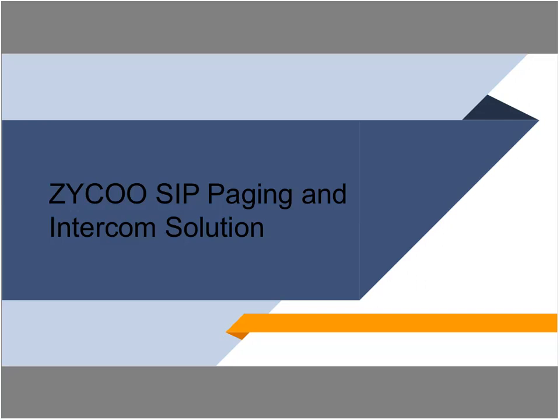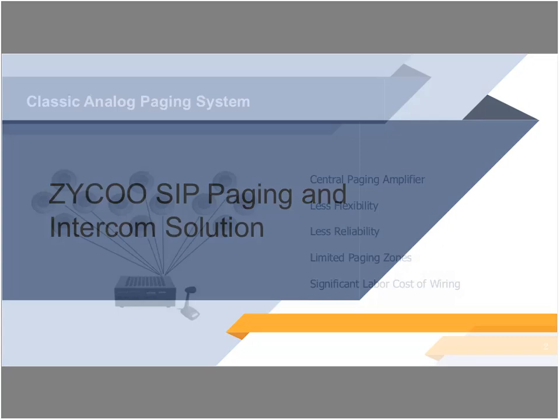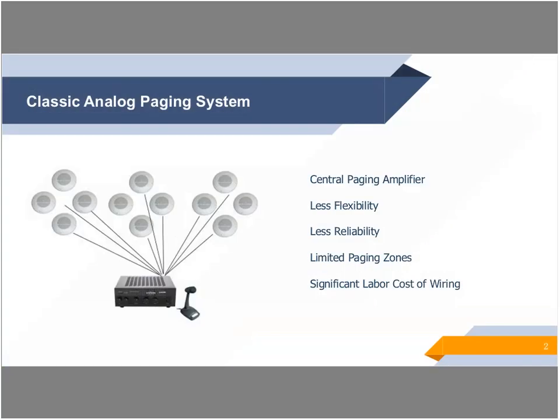First of all, we will take a look at the SIP Paging and Intercom Solution. Before we begin, let's first take a look at the classic analog paging system. The classic method was to connect many speakers to a very large central amplifier. Everything is achieved by wiring and hardware manipulations. And since a single amplifier powers the paging system, failures could be more significant.